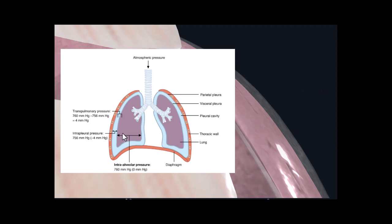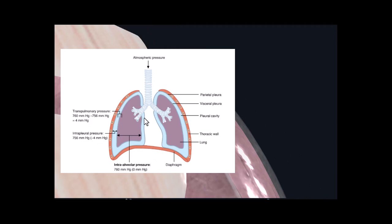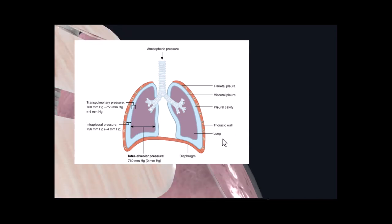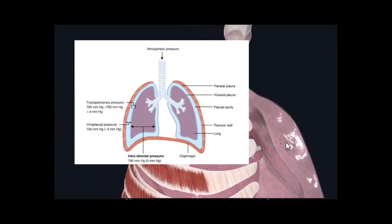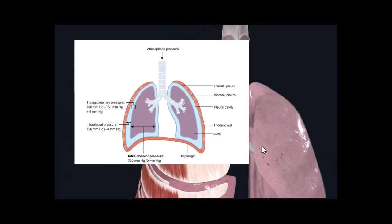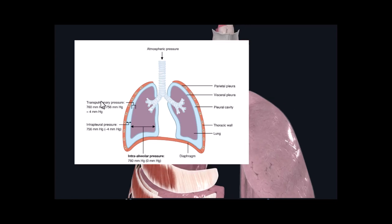The transpulmonary pressure is simply the intra-alveolar pressure minus the intrapleural pressure. The larger this number, the larger the lungs. So somebody with very large lungs — like Shaq or Michael Jordan — would have a larger transpulmonary pressure, maybe 12, compared to a smaller person's value of two or one.